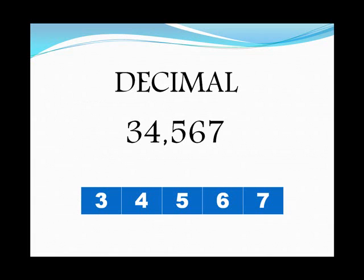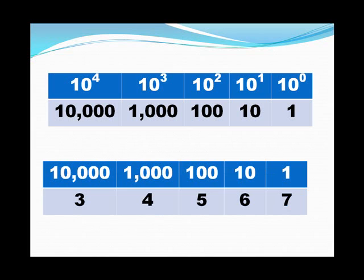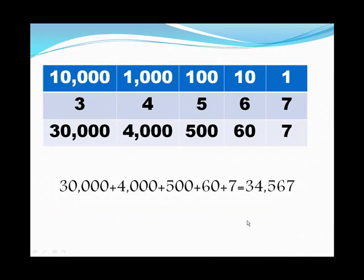Here's your everyday decimal number: 34,567. The way we're taught, each digit has a place value. The ones place is 10 to the zero — anything to the zero power equals one. Next is 10 to the first power, which is 10. Then 10 squared is 100, 10 cubed is 1,000, and 10 to the fourth is 10,000. You take the place value and multiply it by whatever digit occupies that place.